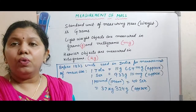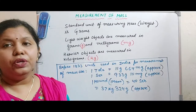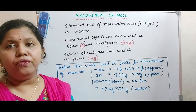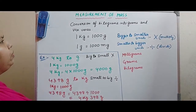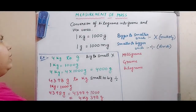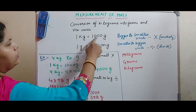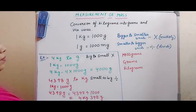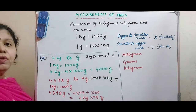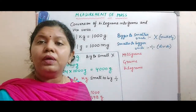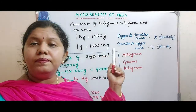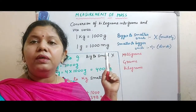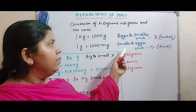Now let us learn about conversions from one unit to another unit in measurement of mass — conversion of kilograms into grams and vice versa. First, let us know the conversion: 1 kg is equal to 1000 grams. This is the conversion you should remember. We use the same process as we used for converting units of length.